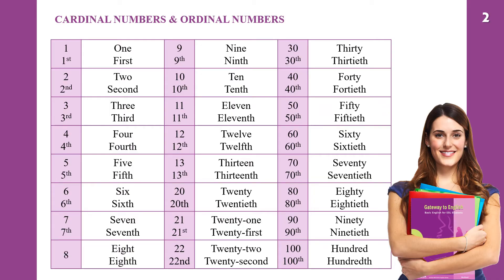Now you see the chart of cardinal numbers. Cardinal means to count, so it's going to be 1, 2, 3. And ordinal number is for order, so it's going to be 1st, 2nd, 3rd.